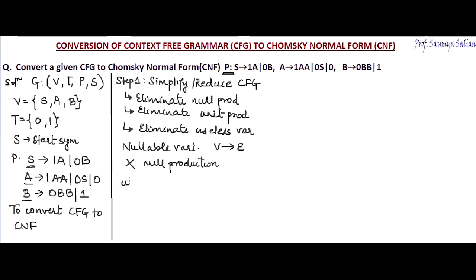Now checking for unit productions. Unit productions are those where a variable derives exactly one variable. S deriving 1A is not a unit production. S deriving 0B is not a unit production. A deriving 1AA, 0S, or 0 — none are unit productions. Variable B also does not have any unit productions. So the grammar does not have any unit productions.